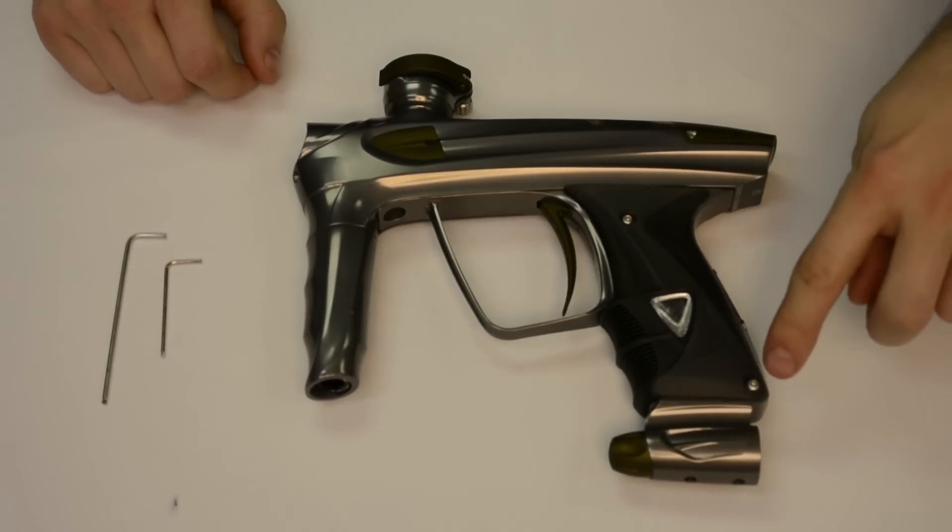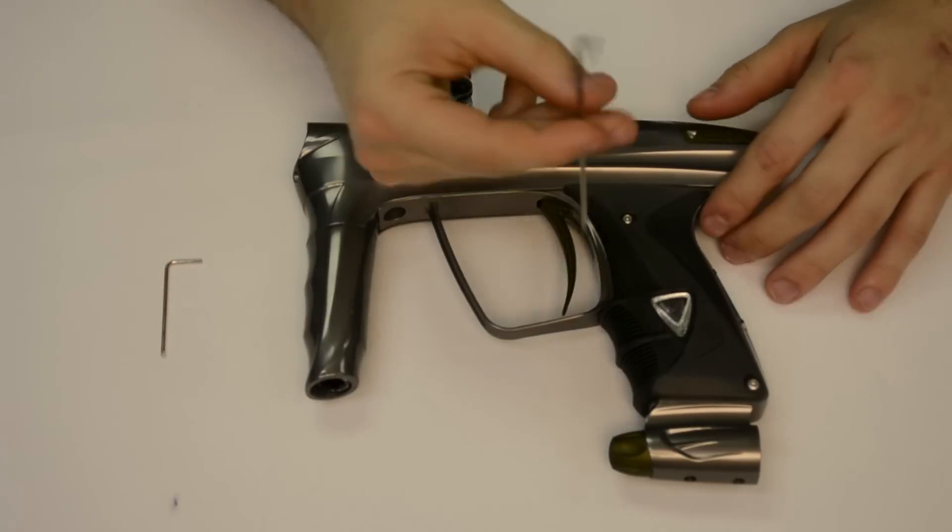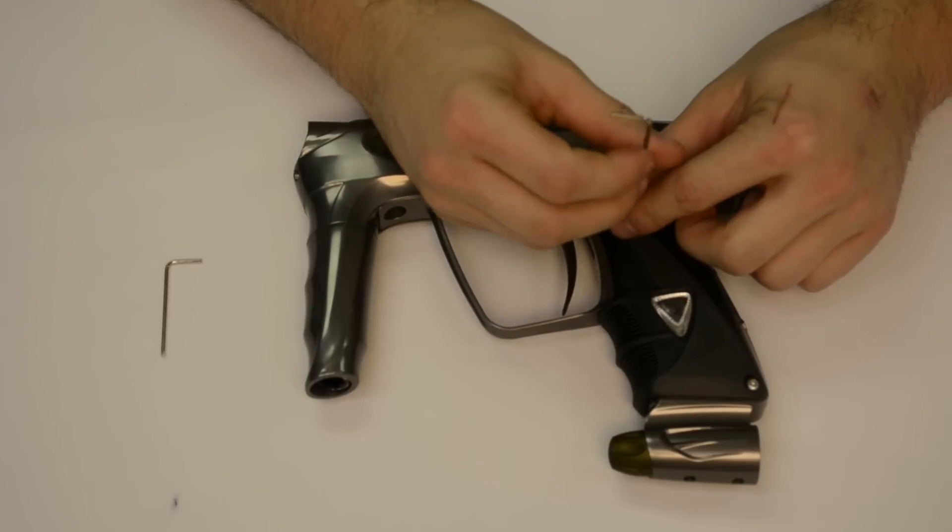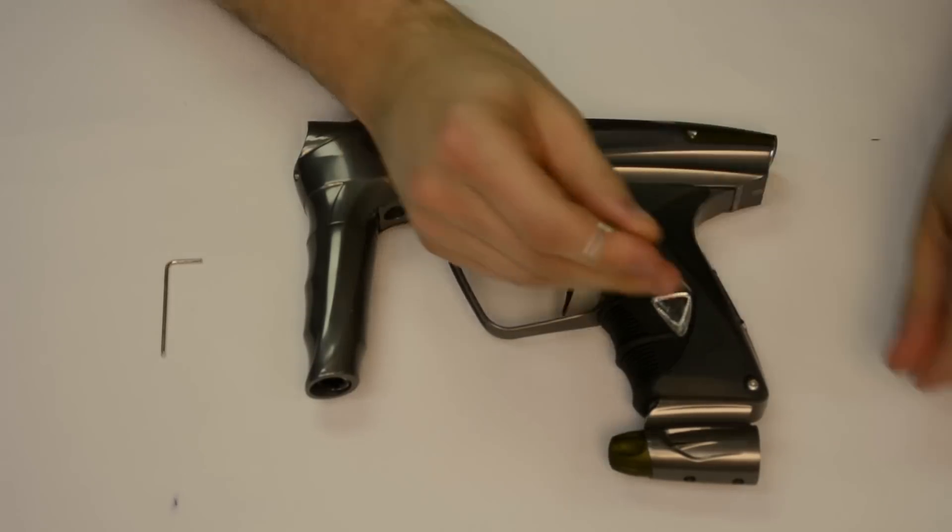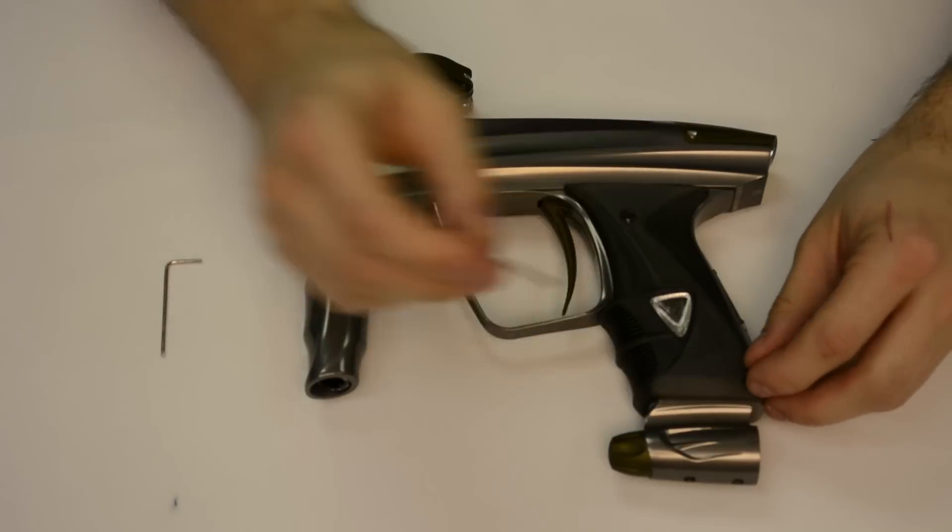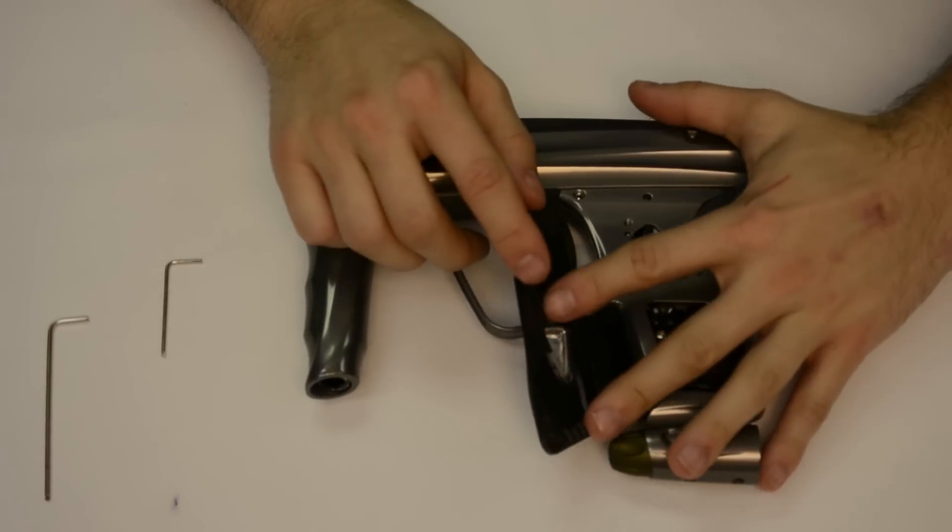First, we will remove the two grip screws from the left side of the gun. Use the 5/64th allen key to remove the two screws. Open the grips, but do not tuck them behind the trigger guard.